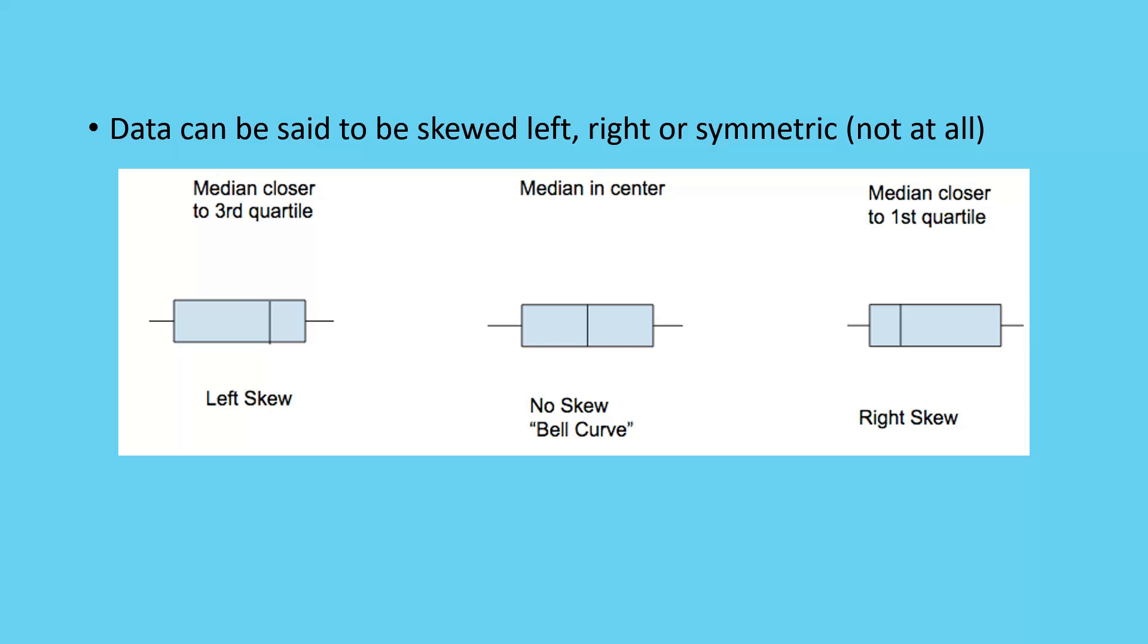And then, if my median is closer to my first quartile, it's said to be right skewed, because everything is leaning off and sort of stretching off to the right, where our data is stretched out there.